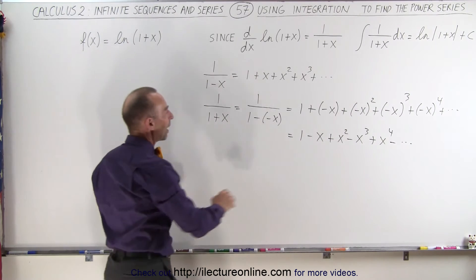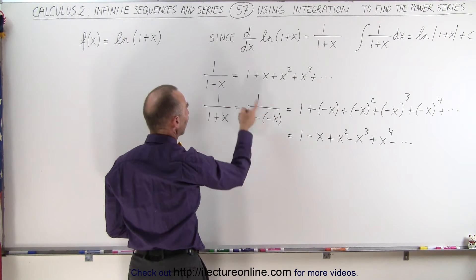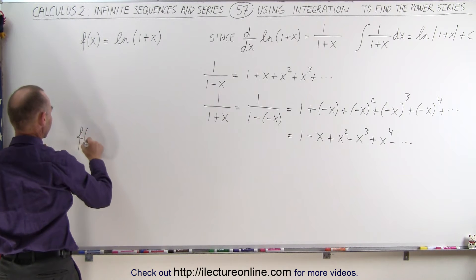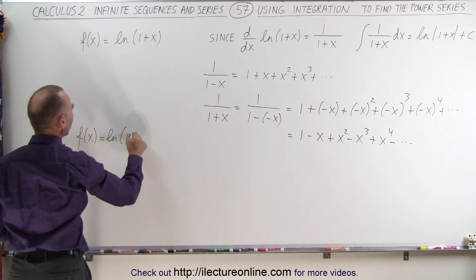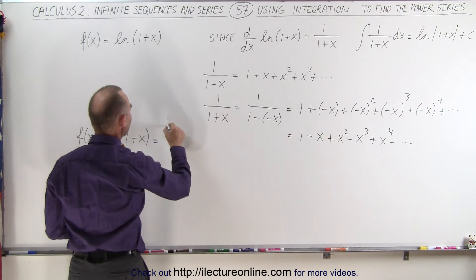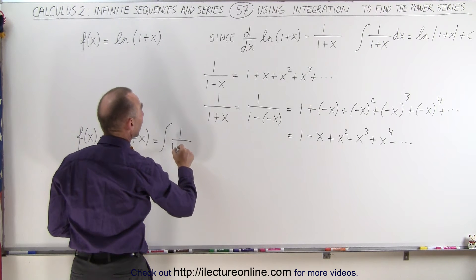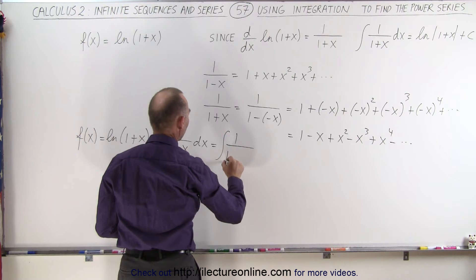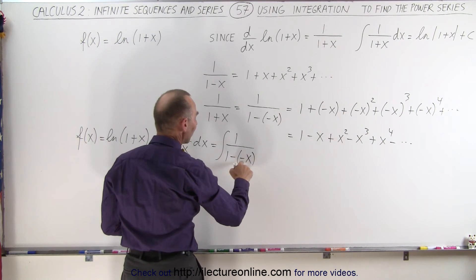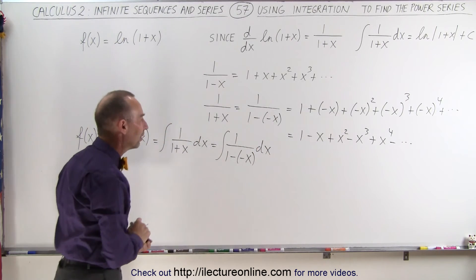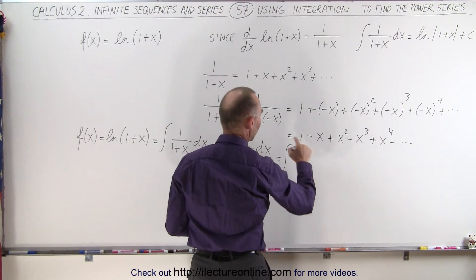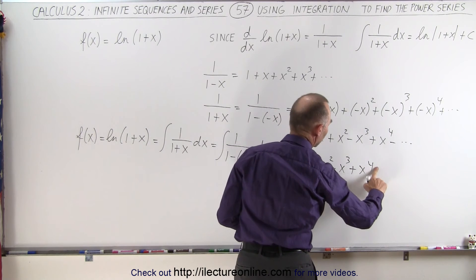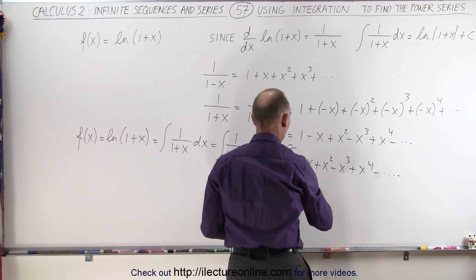Now we've found the power series of 1 over 1 plus x. What we need to do is integrate that power series to get the power series of the natural log of 1 plus x. So f of x equals the natural log of 1 plus x equals the integral of 1 over 1 plus x dx, which equals the integral of 1 minus x plus x squared minus x cubed plus x to the fourth minus and so forth, times dx.